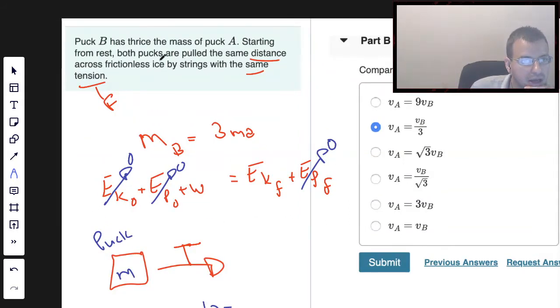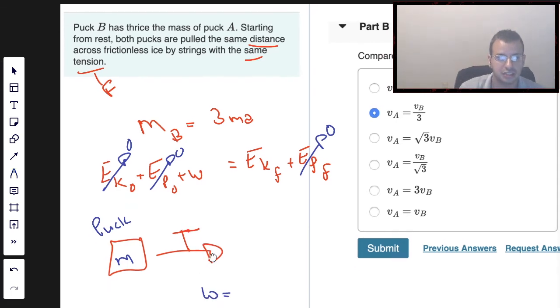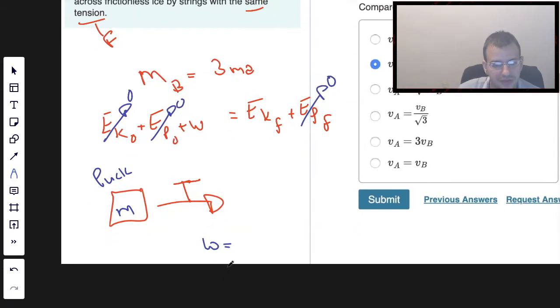They have the same tension, but we don't know if it's a constant tension. So we're just going to say that work is W, some value. And that's going to equal kinetic energy final. It's going to be 1/2 M V final squared.